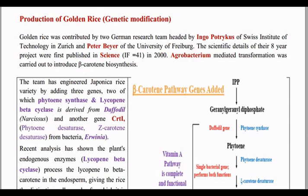Now, the production of golden rice. The main credit goes to two great scientists: Ingo Potrykus and Peter Beyer. After eight years of work, they published their results for the first time in the journal Science, which has an impact factor of 41 today — which is very high. They published their work in the year 2000. They introduced new genes into rice using a natural genetic engineer: Agrobacterium tumefaciens.